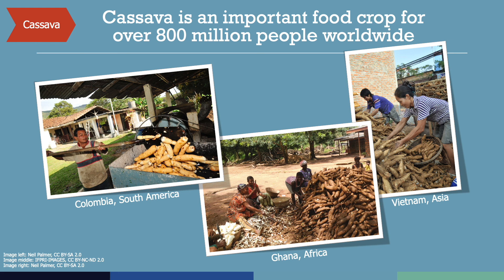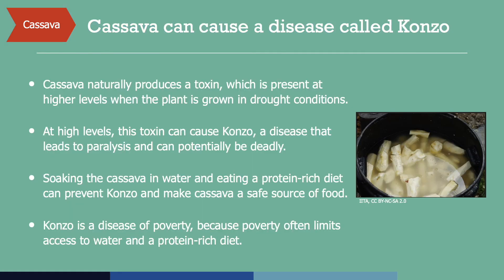You may be familiar with cassava products such as tapioca, or the bubbles in bubble tea or boba. Cassava plants naturally produce a toxin that can cause konzo, a disease that leads to paralysis and can potentially be deadly. This is particularly problematic when cassava is grown in drought conditions. However, there are different approaches for avoiding konzo. First, soaking cassava in water for several days reduces the plant's toxicity. And second, eating a protein-rich diet can help the body to break down the toxin more effectively. While these solutions may appear to be relatively simple, their implementation can be difficult due to systemic and historical barriers.